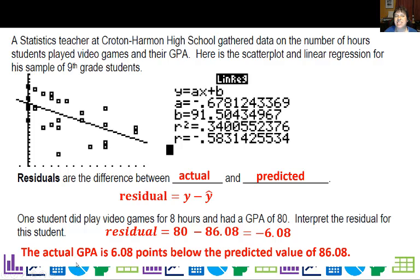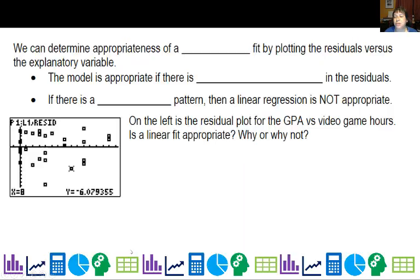So actual minus predicted is negative 6.08. How do we interpret that? Well, the actual, and it's easier to say the actual one first, is 6.08 points below the predicted value of 86.08. So a negative residual means actual is below. Positive residual means the actual is above.